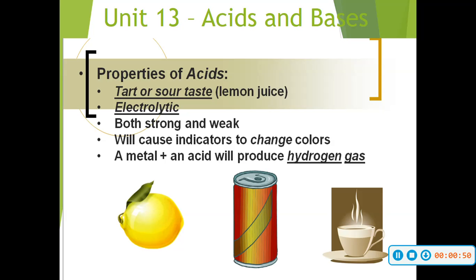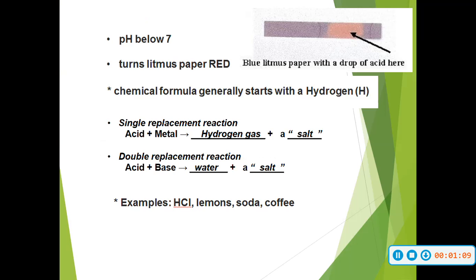We do have both strong and weak acids. Acids will cause indicators to change colors, and we'll get into that in just a second. And if you combine a metal and an acid, it will produce hydrogen gas — that's also something we'll get into in just a second.